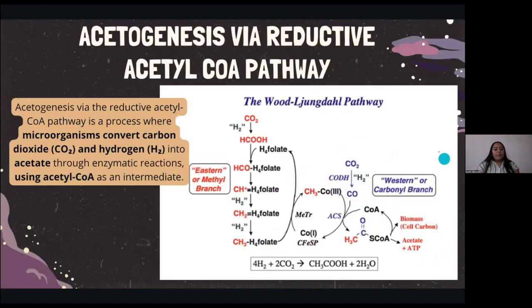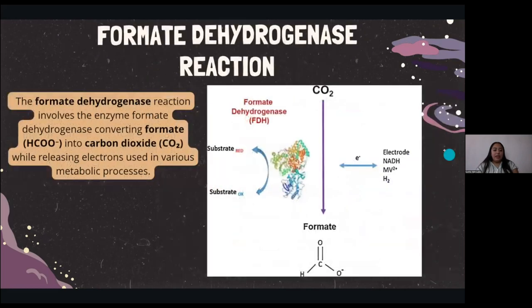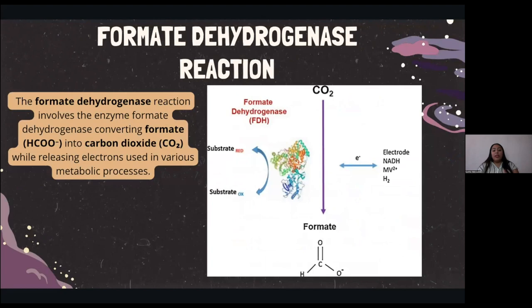We also have the pathway of acetogenesis via the reductive acetyl-CoA pathway, where basically carbon dioxide and hydrogen are transformed by bacteria into acetate using acetyl-CoA as an intermediate. And finally, we have the formate dehydrogenase reaction. Formate dehydrogenase is an enzyme that transforms formate into carbon dioxide while also releasing electrons during this process, which are essential for many metabolic processes of the bacteria that live here.